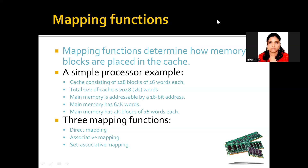To map the data from the main memory to the cache memory, there are three techniques available: one is direct mapping, the second one is associative mapping, and the third one is set associative mapping.